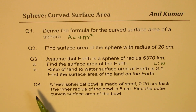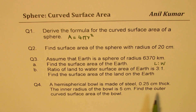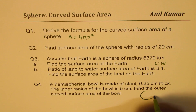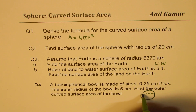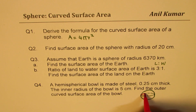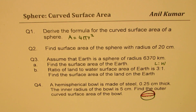Question number four: a hemispherical ball made of steel 0.25 centimeters thick, with an inner radius of five centimeters — find the outer curved surface area of the ball. A hemisphere means we are only talking about the top portion of a sphere, just cutting it apart. Both the lower and upper parts give the same result. I hope you understand the concepts — pause the video, answer these questions, and then look into my suggestions.